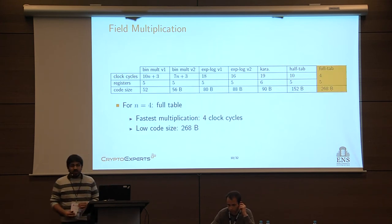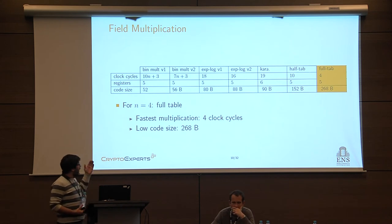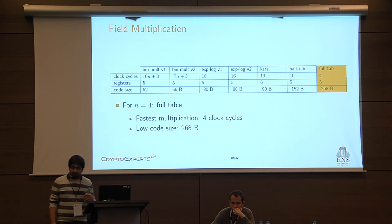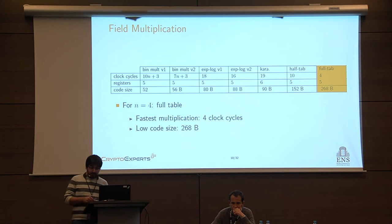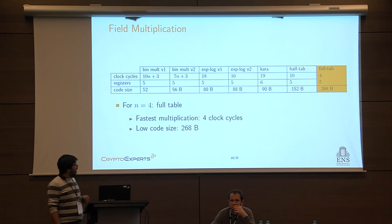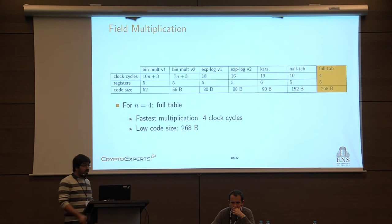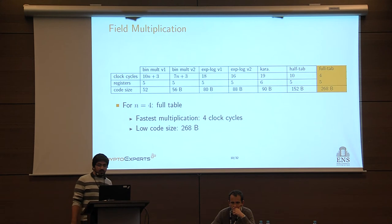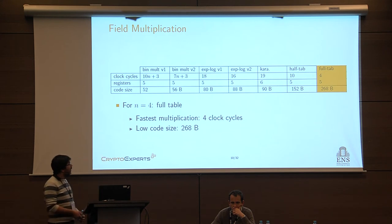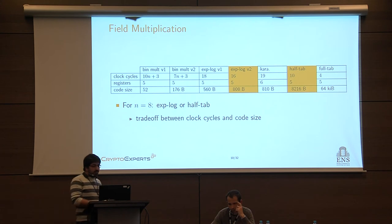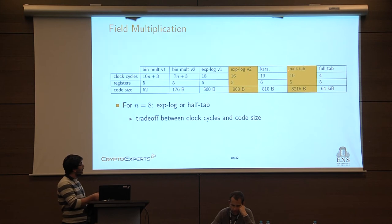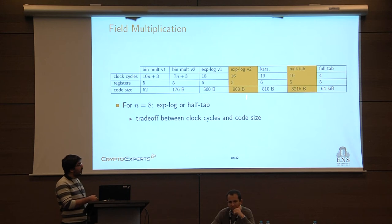In terms of selection: when N equals 4, the full table multiplication is still affordable at only 268 bytes and is by far the fastest option. So when working on a field where N equals 4, we choose the full table. When N equals 8, we select between two multiplications depending on constraints: for speed, we choose half table since it is faster, but it needs a table ten times bigger than xplog.